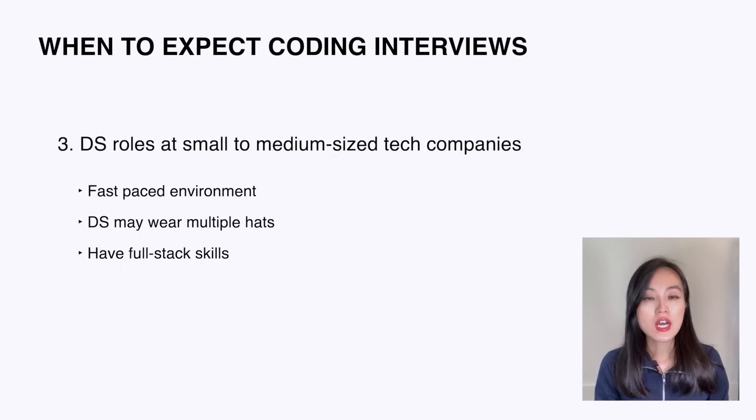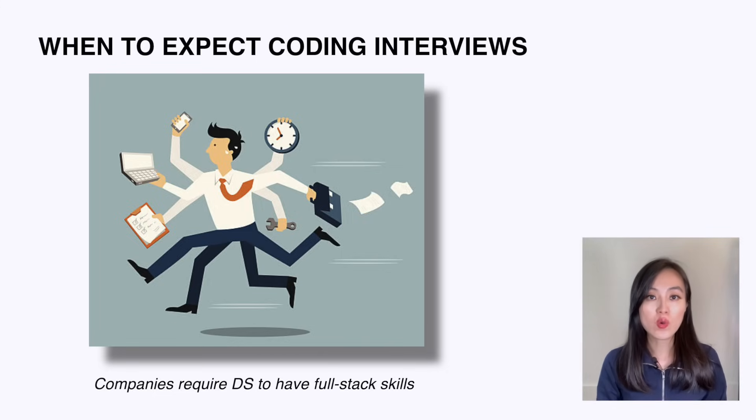The third type of role is data scientists at small to medium-sized tech companies. The environment in such companies is fast-paced and data scientists may wear multiple hats. In particular, companies require data scientists to have full-stack skills to get things done quickly and efficiently. Having strong coding skills will not only help you stand out in the interview but also help you do the job well. However, if you are just getting started, it makes sense to prioritize other things first.